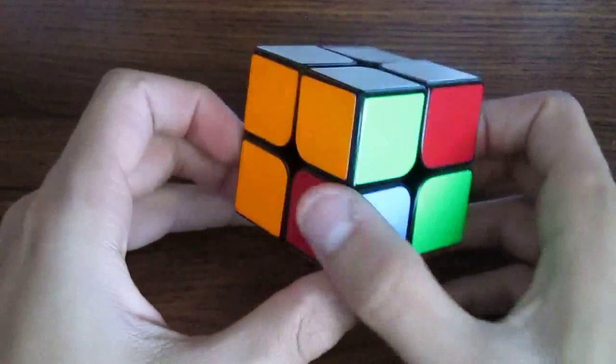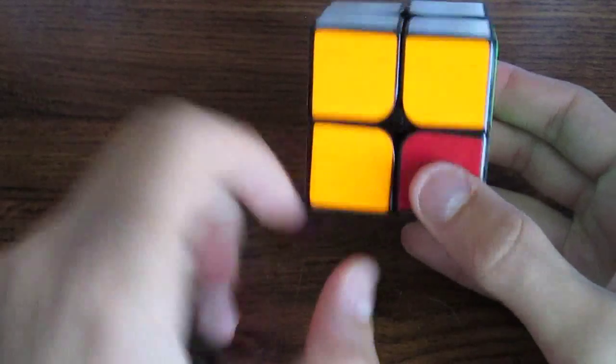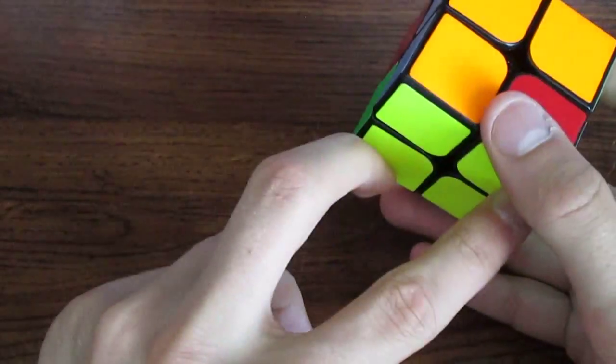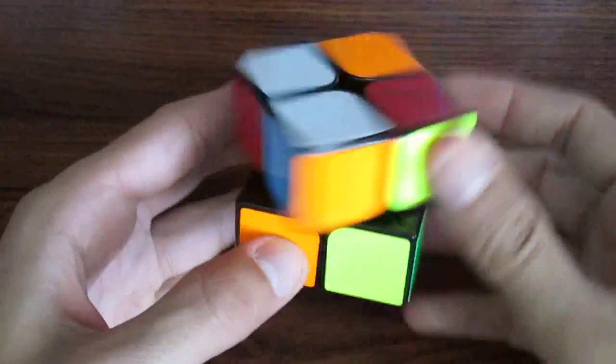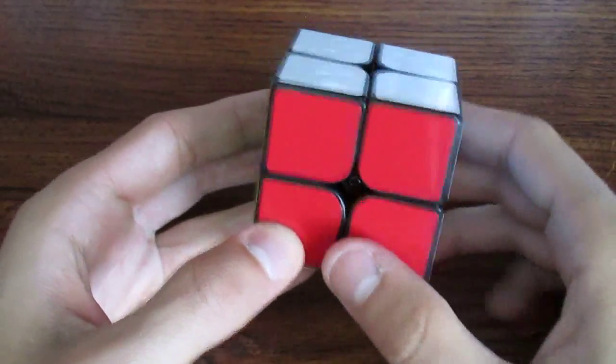And now we scan this middle area, and we see a bar and we see another piece. And this is another case that we know that flips these two pieces and then two pieces on the bottom. And this is a very easy algorithm to remember.